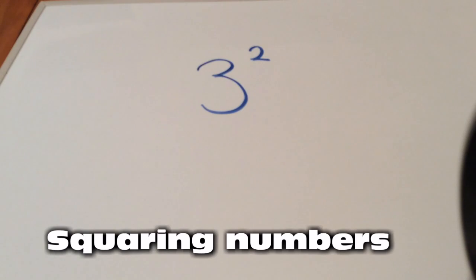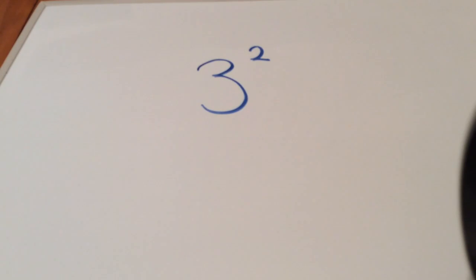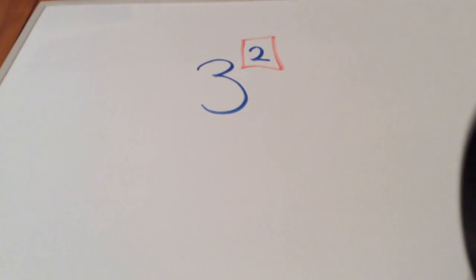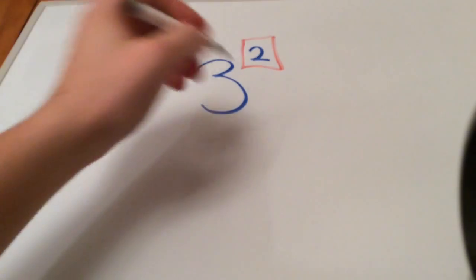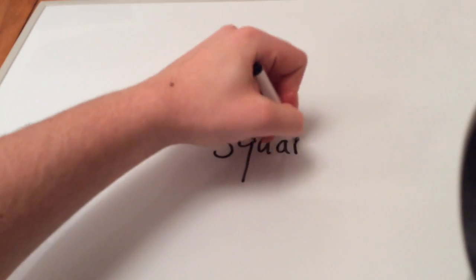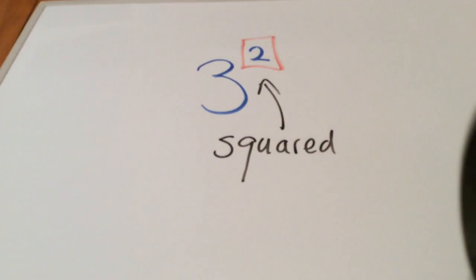Today we are going to look at squaring numbers. Now you see the number in front of me is 3, and then a little 2 like that. Some of you will be thinking, well what does that little 2 mean? Well, the little 2 actually means squared, so before us we have the question 3 squared.